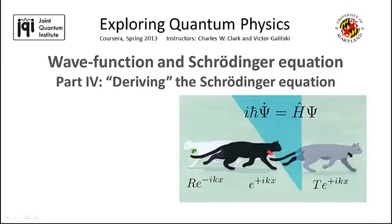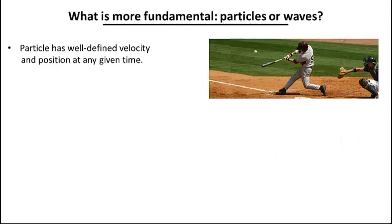Now we are going to rely on the wave-particle duality to deduce the form of the main equation of quantum physics, the Schrödinger equation. But before going to this main part, let me ask the following question: which picture is more fundamental, the particle-based picture or the wave-based picture?